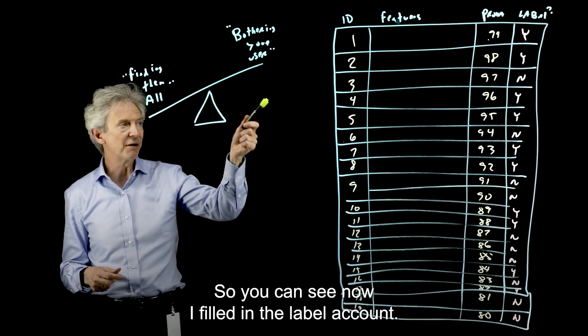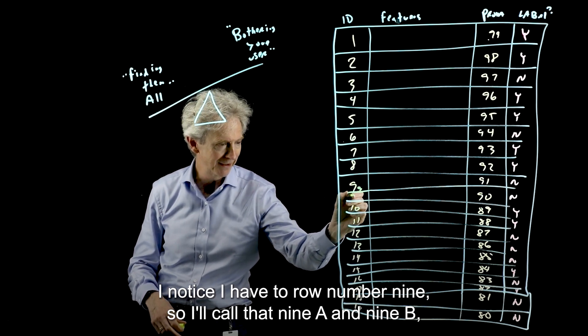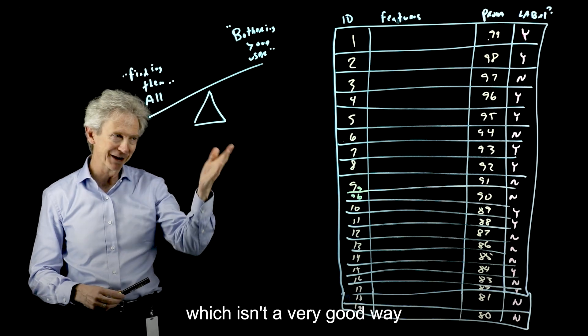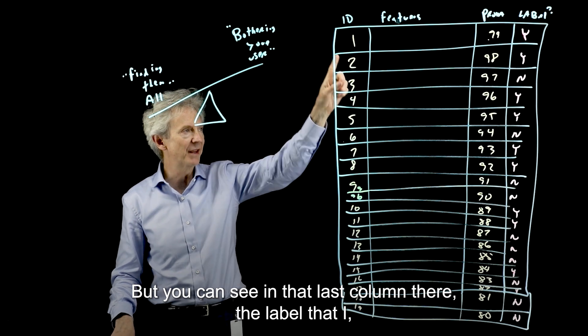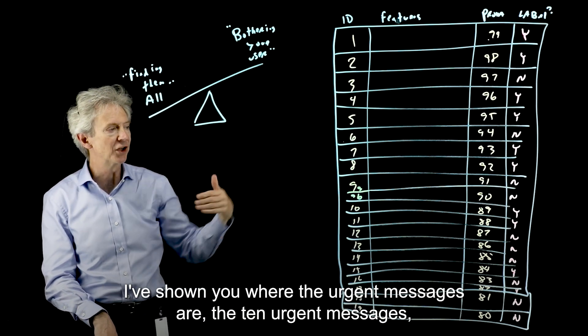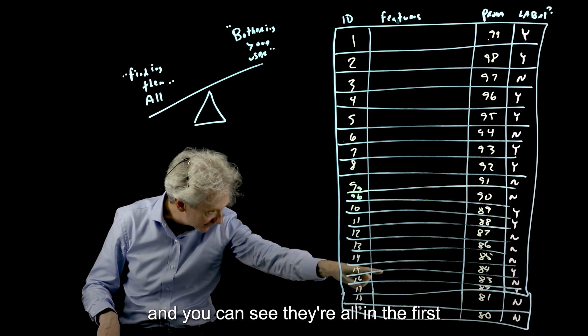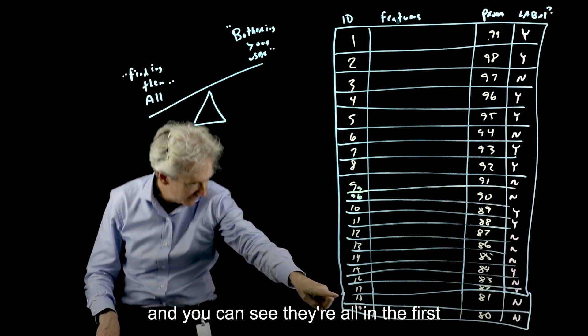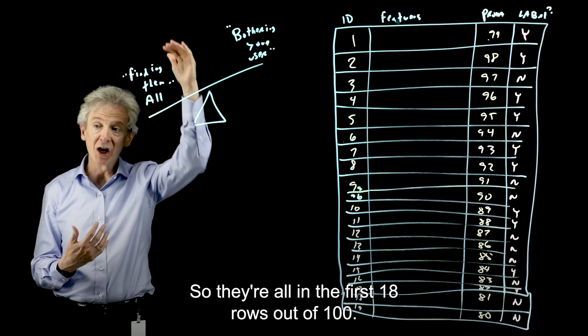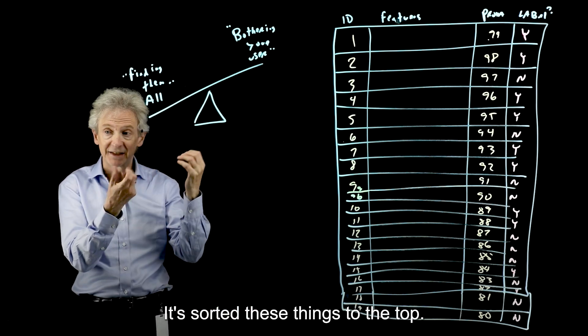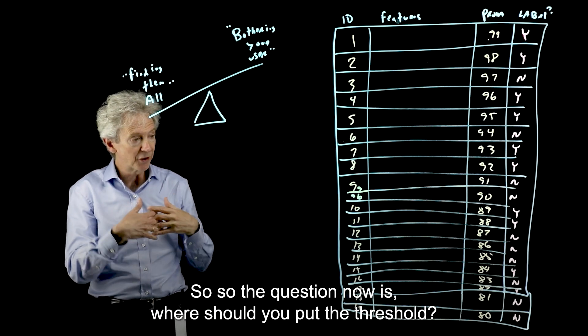Okay. So you can see now I filled in the label column. I notice I have two row number nines. We'll call that 9A and 9B, which isn't a very good way to do it. But I don't want to rewrite that whole board. But you can see in that last column there the label that I've shown you where the urgent messages are, the 10 urgent messages. And you can see they're all in the first 18 rows, basically. So they're all in the first 18 rows out of 100. So this is a pretty good model. It's sorted these things to the top. It's found all 10 in the first 18.